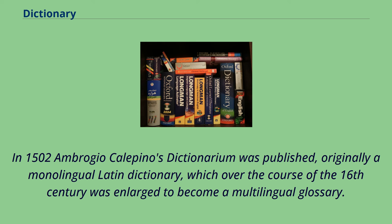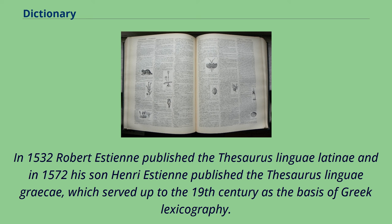In 1502, Ambrogio Calepino's Dictionarium was published, originally a monolingual Latin dictionary, which over the course of the 16th century was enlarged to become a multilingual glossary. In 1532, Robert Estienne published the Thesaurus Linguae Latinae, and in 1572 his son Henri Estienne published the Thesaurus Linguae Graecae, which served up to the 19th century as the basis of Greek lexicography.